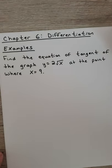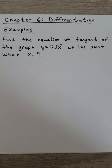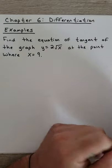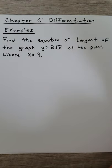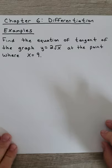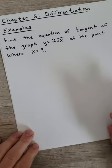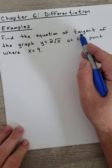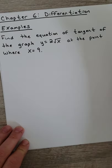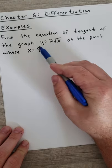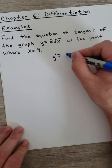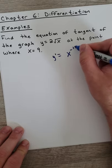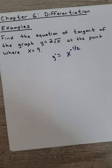Now let's look at examples more in line with what you might see on exam questions. Find the equation of the tangent of the graph at the point where x equals 9. First, find the expression for the tangent — that's the derivative itself. We already took the derivative of 2 root x, which was x to the negative one half. To find the equation of a line we need a point and the gradient. We have x equals 9, so plug into the original: y equals 2 times root 9 equals 6. Our point is (9, 6).